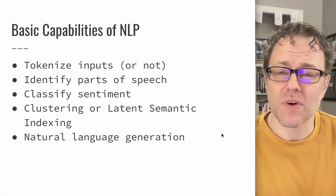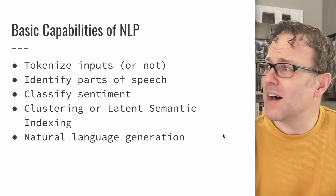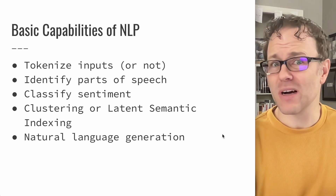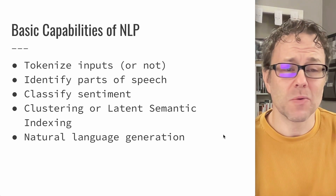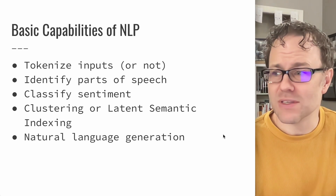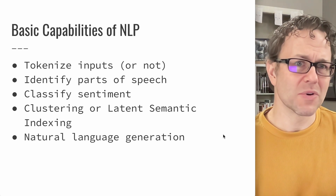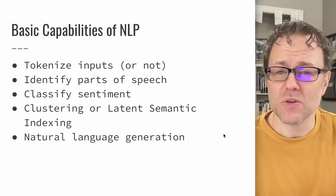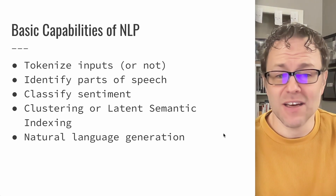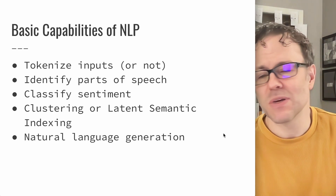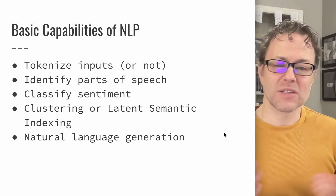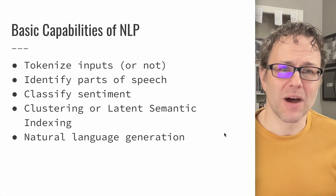NLP can identify the parts of speech in a sentence and can try to classify the sentiment — is it positive or negative? This is useful for understanding whether a message is a complaint or praise. You can also use it for clustering or latent semantic indexing, which is the idea of identifying the meaning of words based on other contextual words that are nearby.